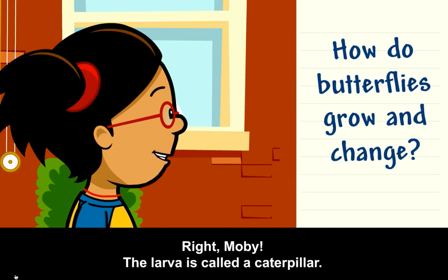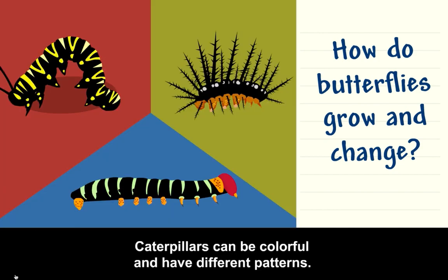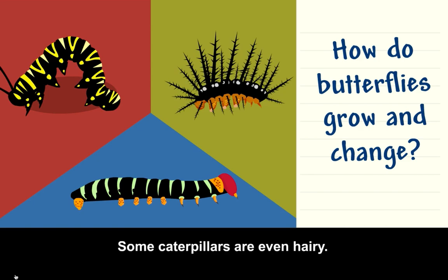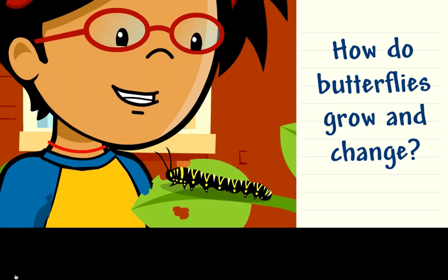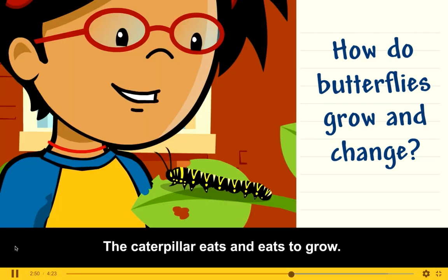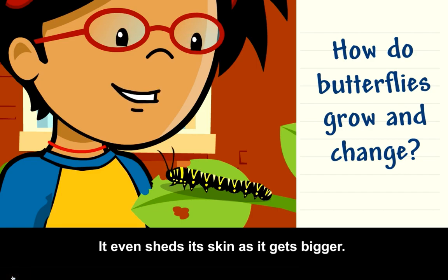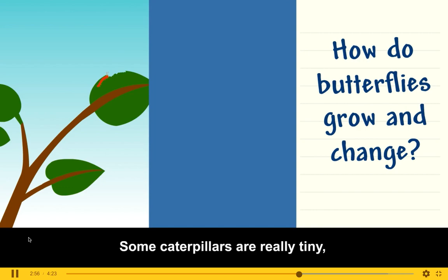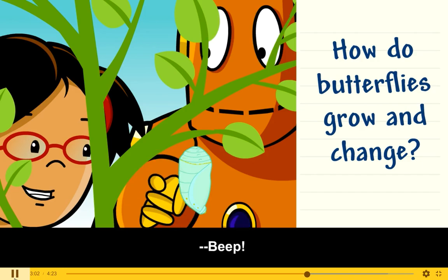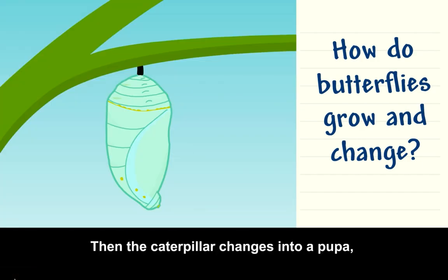The larva is called a caterpillar. Caterpillars can be colorful and have different patterns. Some caterpillars are even hairy. The caterpillar eats and eats to grow. It even sheds its skin as it gets bigger. Some caterpillars are really tiny, but others are really big.